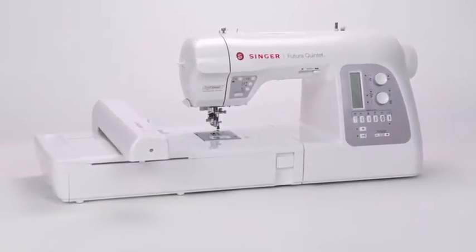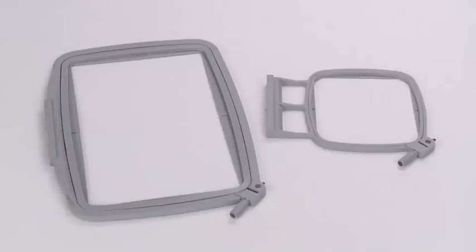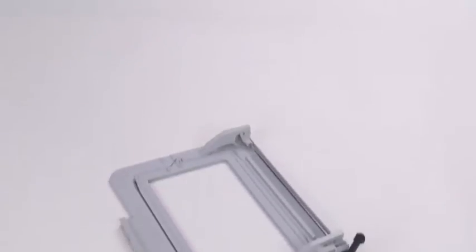The Singer Futura Sewing and Embroidery Machine features a large hoop, a small hoop, and an endless hoop.